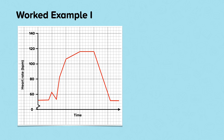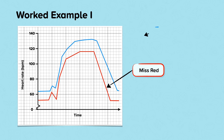When the heart rate returns back to rest it plateaus out. Here is a graph showing the heart rate of Miss Red and Miss Blue. This is their heart rate before, during and after participating in the same exercise. Miss Red's heart rate is represented by the red line on the graph and Miss Blue's heart rate is represented by the blue line on the graph. They work at the same intensity throughout the class.